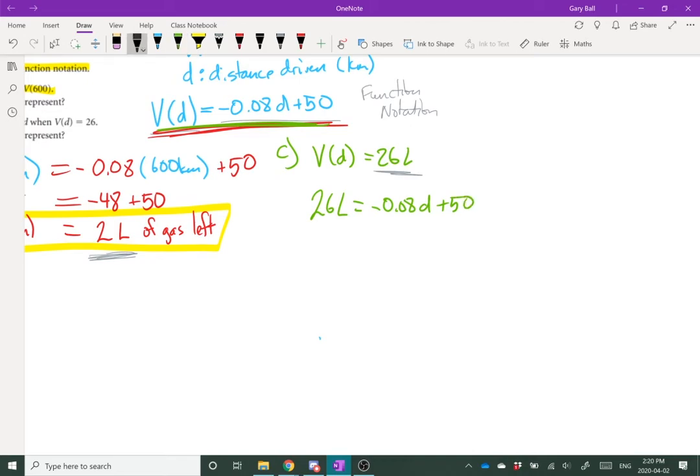Now, let's solve for D. Subtract 50. Subtract 50. 26 minus 50 gives me negative 24 equals negative 0.08 D. Divide both sides by negative 0.08. I end up with 300 equals D.